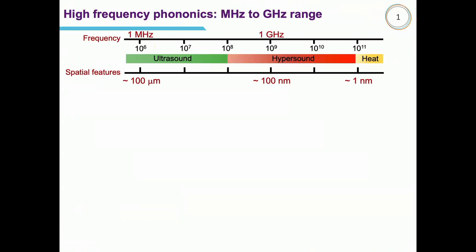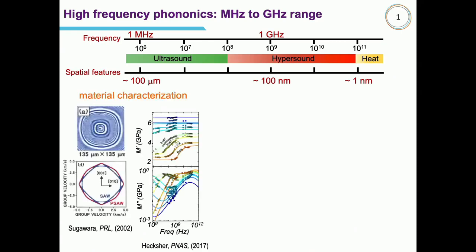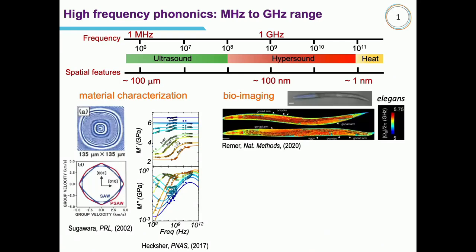By high-frequency waves, I mean the frequency range from the megahertz to gigahertz — vibrations and elastic waves in this range — and this is very useful for structures with spatial features ranging from 100 microns down to the nanometer. I can divide applications into three categories: material characterization, such as anisotropy in solids or rheology of soft solids at high frequencies; bioimaging, using mechanical properties as a contrast mechanism to image living structures and living matter.